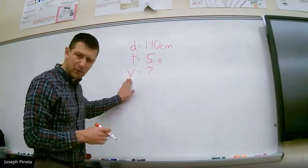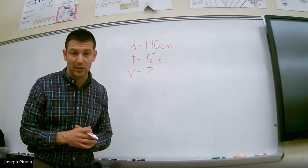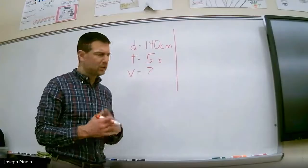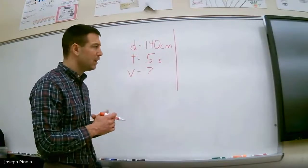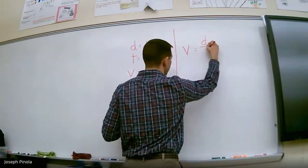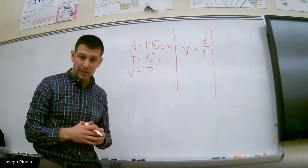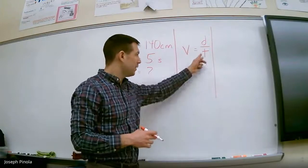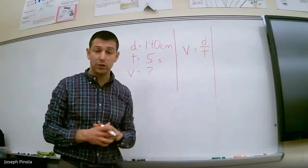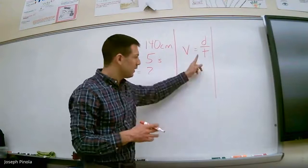Speed is very closely related to velocity. There is a slight difference between speed and velocity, which we'll talk about in the next couple of days, but for now we can use the letter V to represent speed in our equations. The equation to find the speed of any object is: speed equals distance divided by time. Objects with a really high speed travel very far distances in very short amounts of time, while objects with very low speeds travel very short distances in very long amounts of time.